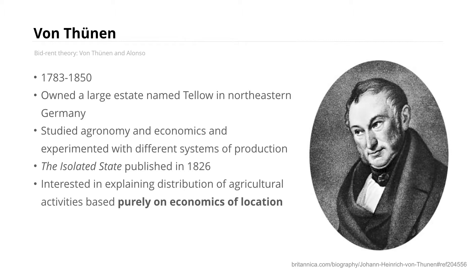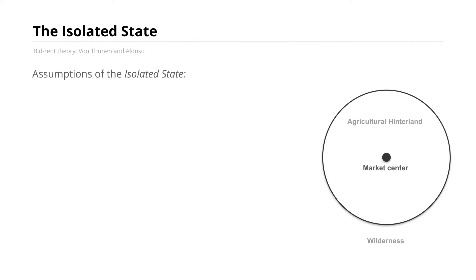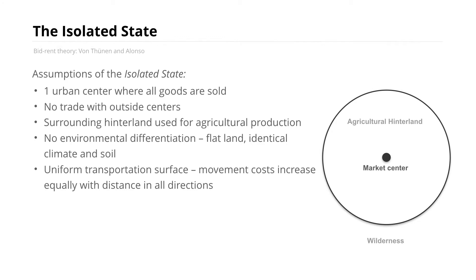Von Thunen was interested in explaining the distribution of agricultural activities based purely on the economics of location. In this sense, von Thunen really begins the idea of location theory — creating a universal economic theory for explaining the locational distribution of different activities. As we'll see throughout the rest of this course, all subsequent location theorists call back to von Thunen's initial theory, often very directly, with theories building on one another over time. Each location theory is focused on its time and the dominant economic conditions of that era.